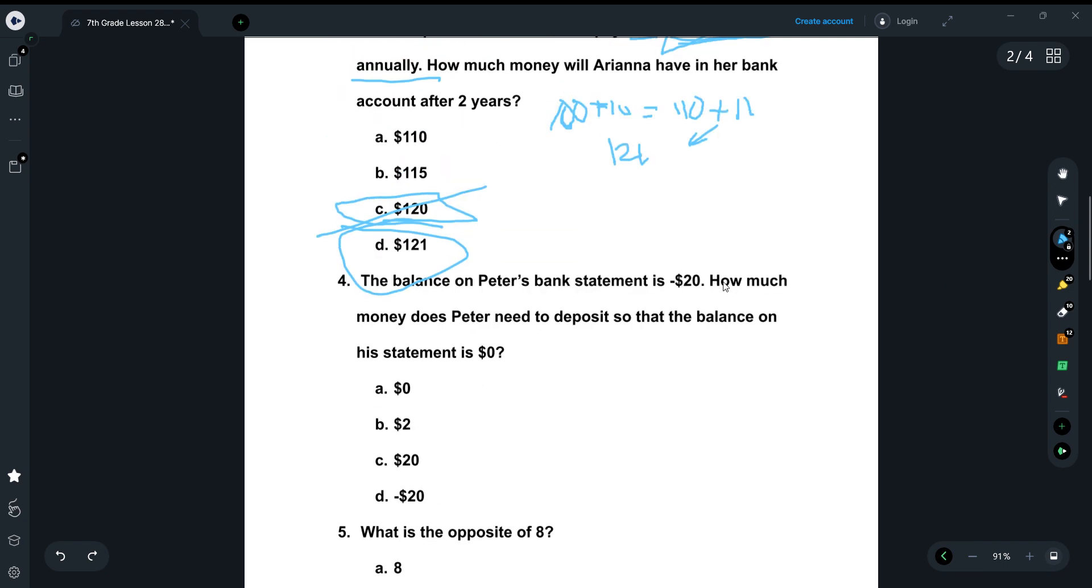Okay, number four. The balance of Peter's bank account is negative $20. How much money does Peter need to deposit so that the balance on his statement is zero? So this is very simple. So if you have negative 20, how much do you need to make it zero? If you want to do this mathematically, I mean, this is very logical. 20 minus 20. If we think about it as a minus sign, 20 minus 20 equals zero. So yeah, your answer is obviously C, 20.